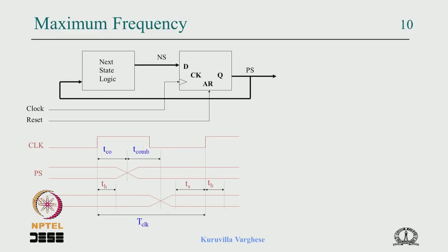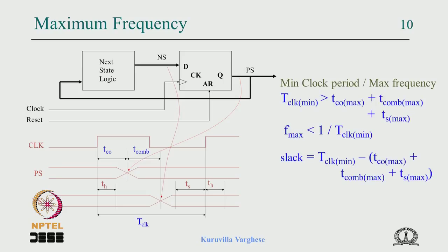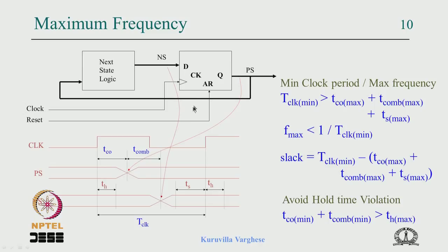For a counter there are two timing issues: one is the maximum frequency. The minimum clock period is the flip-flop delay Tcq plus the combinational delay plus the setup time — analysed from one clock edge to the next. At this point the data comes after TCO, then after TCO plus Tcomp, and data must be set up before the next clock edge. So the minimum clock period is TCO plus Tcomp plus Tsetup. We give a margin called slack, and maximum frequency is the inverse of the minimum clock period.